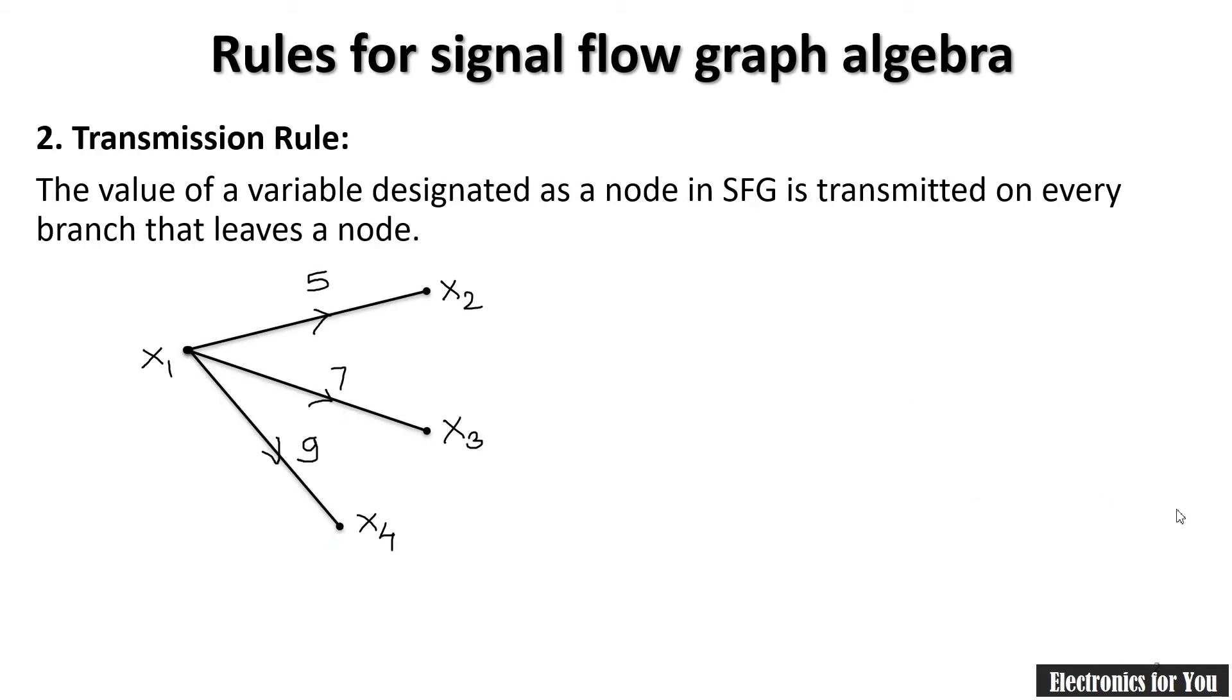The second one is transmission rule. Transmission, as the name indicates, it will transmit the signals. In SFG the value of variable designated as a node is transmitted on every branch that leaves a node. If this is your node and it is leaving some signals, then here definitely you will get some equations by using transmission rule.